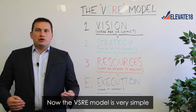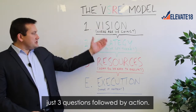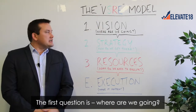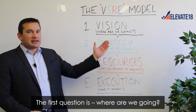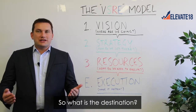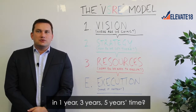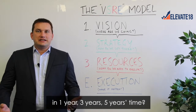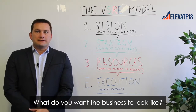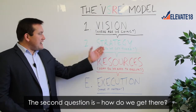The VSRE model is very simple — just three questions followed by action. The first question is: where are we going? That's the vision question. What is the destination, what is the vision for your business in one year, three years, five years time — what do you want the business to look like?